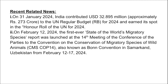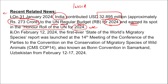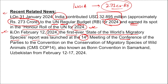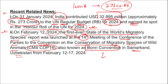On 31st January, India contributed 32.895 million dollars — close to 273 crore rupees — to the UN regular budget for 2024 and earned a spot in the owner role of UN for 2024. On 12th February 2024, the first-ever State of the World's Migratory Species Report was launched at the 14th meeting of the Conference of Parties to the Convention on the Conservation of Migratory Species of Wild Animals — also known as the Bonn Convention or CMS COP 14 — held in Samarkand, Uzbekistan.